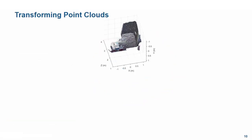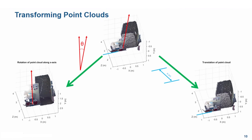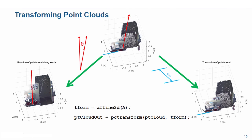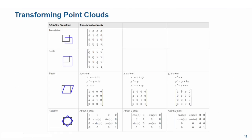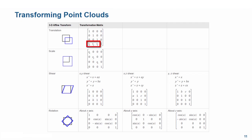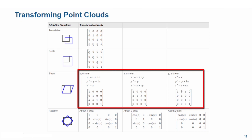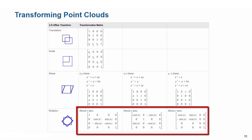Let's go back to the presentation to discuss transforms. Often, we obtain point clouds which need to be transformed — they may need to be rotated along an axis or translated along another. The function pctransform can perform any affine transformation, such as translation or rotation defined by tform. The transform tform is specified by an affine3d object where A is a valid 4x4 affine transformation matrix. To translate along one of the axes, we change values in the last row. To scale, we change values along the diagonal. To add shear or skew, or to rotate by an angle along an axis, we choose the corresponding options in the matrix.